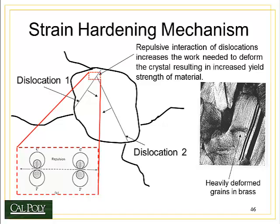Why do two dislocations repel? The answer has to do with the nature of the dislocation and the way it causes distortion in the surrounding lattice. Imagine two dislocations on the same plane, each with an extra half plane of atoms. As they approach each other, two compressive strain fields begin to interact and repel because the crystal doesn't want the atomic bonds to be compressed too much. When atoms are in compression due to the extra half plane, repulsive forces go up dramatically, as seen in the energy curve for two bonded atoms. So when two dislocations come into contact with the same orientation, they tend to repel.